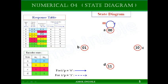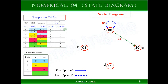The second row of the response table: you are in the 00 state and giving input 1. The next state would be 10, so I am using a dotted line from 00 to 10 because the input is 1. The output for this transition is 11. So the 00 state transitions are now complete.